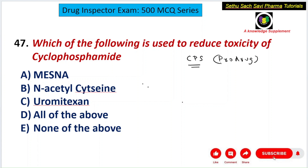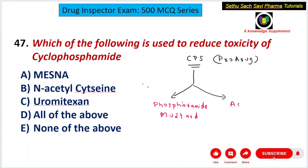Cyclophosphamide as such is inactive and must be metabolized by liver enzymes. It is then converted to two molecules: the first is phosphoramide mustard, and the second metabolite is acrolein.